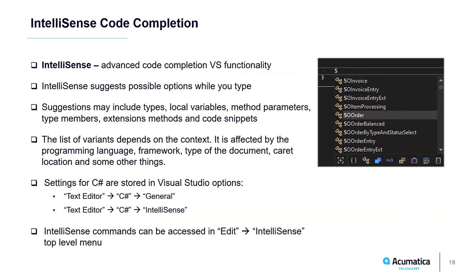The list of variants depends on the context — the programming language, framework used by the project, type of document, current caret location. IntelliSense greatly helps with the Acumatica framework because the framework consists of normal C# types. It shows available framework APIs, a list of DAC fields for a DAC, and available BQL operators when writing BQL queries. For C#, you can find IntelliSense settings in Visual Studio Options under Text Editor > C# > General and Text Editor > C# > IntelliSense.